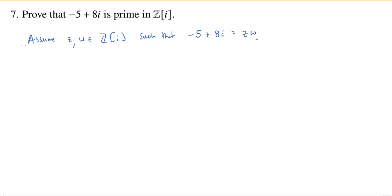Now that doesn't rule out negative five plus eight i being prime. If we can show that this implies that either z or w is a unit, then we'll actually conclude that negative five plus eight i is prime.